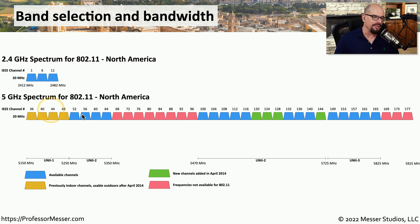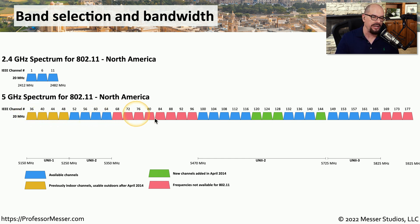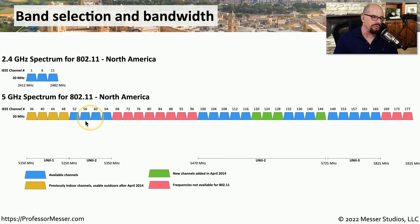Everything on the 5 gigahertz list that is not red can be used to communicate. As you can see, there are many more 20 megahertz channels available on the 5 gigahertz spectrum than there ever were on 2.4 gigahertz. This allows you to easily find some available spectrum in your area, especially if there are a lot of access points being used simultaneously.